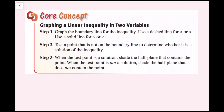I'm going to explain one way to graph inequalities in two variables, and then show you another way that I think is a little bit easier. Step 1: graph the boundary line — use a dashed line for less than or greater than, and a solid line for less than or equal to or greater than or equal to. Step 2: test a point not on the boundary line. Step 3: if the test point is a solution, shade the half plane that contains it; if not, shade the other half. My alternate method is to determine whether to shade above or below the line based on whether we have greater than or less than.